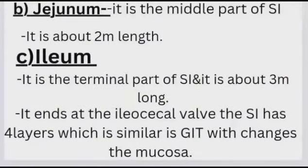The jejunum is the middle part of the small intestine and is about two meters in length. The ileum is the terminal part of the small intestine and is about three meters long.